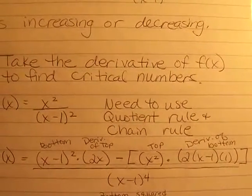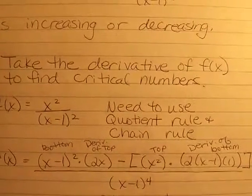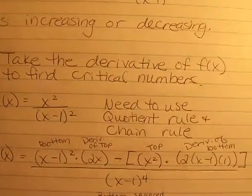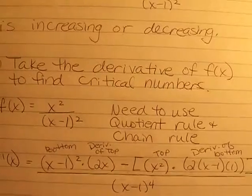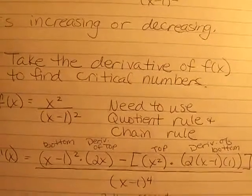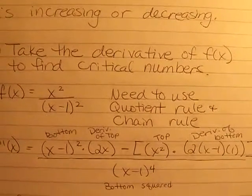Now when you take the derivative of the bottom, that's when you're going to be using the chain rule. So the power comes down out front, we lower the power by 1, and we multiply the term by the derivative of the inside. And that's all over the bottom term squared.